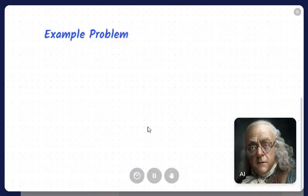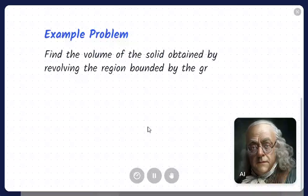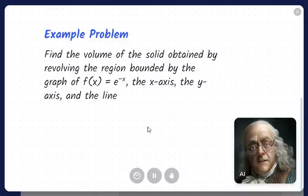Now, let's apply these steps to an example problem. We are asked to find the volume of the solid obtained by revolving the region bounded by the graph of F of X equals e to the power of negative X, the X axis, the Y axis, and the line X equals 1 about the Y axis.